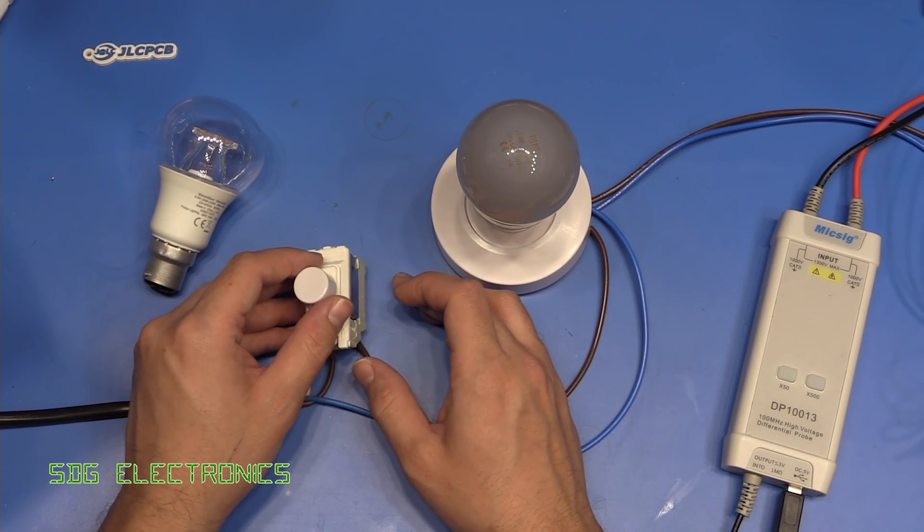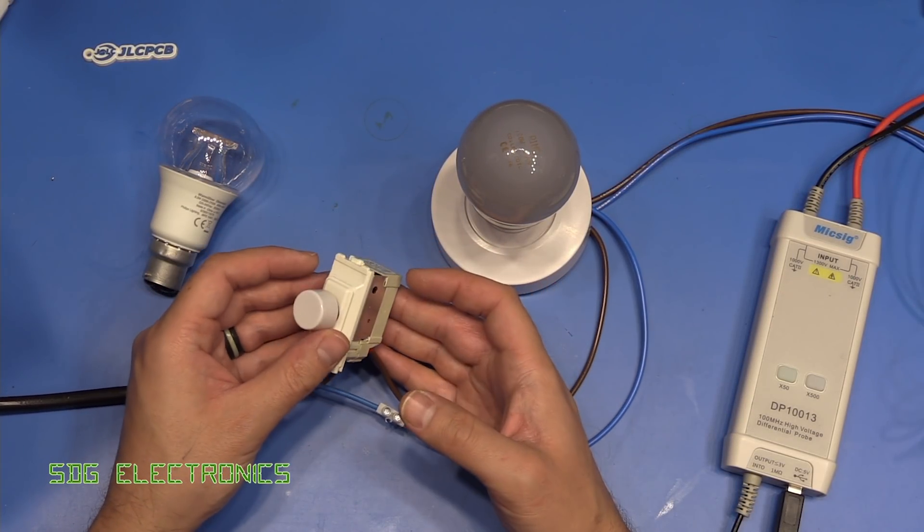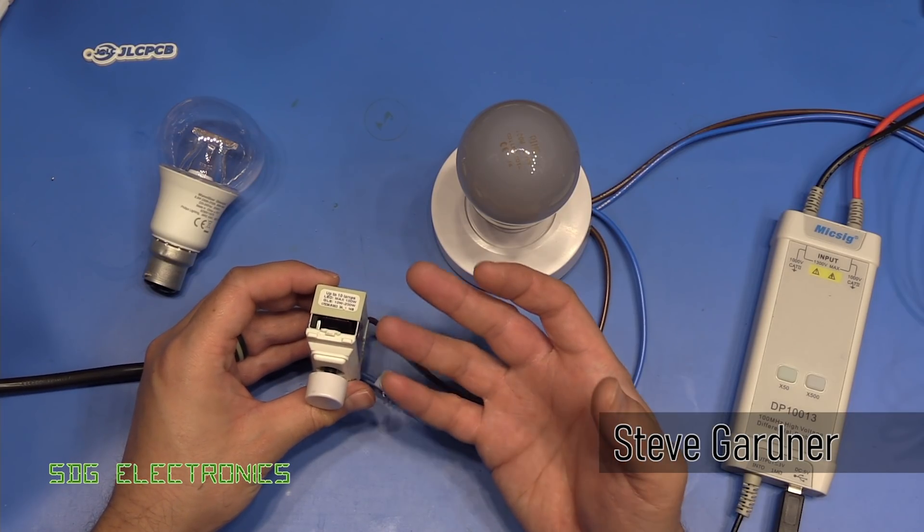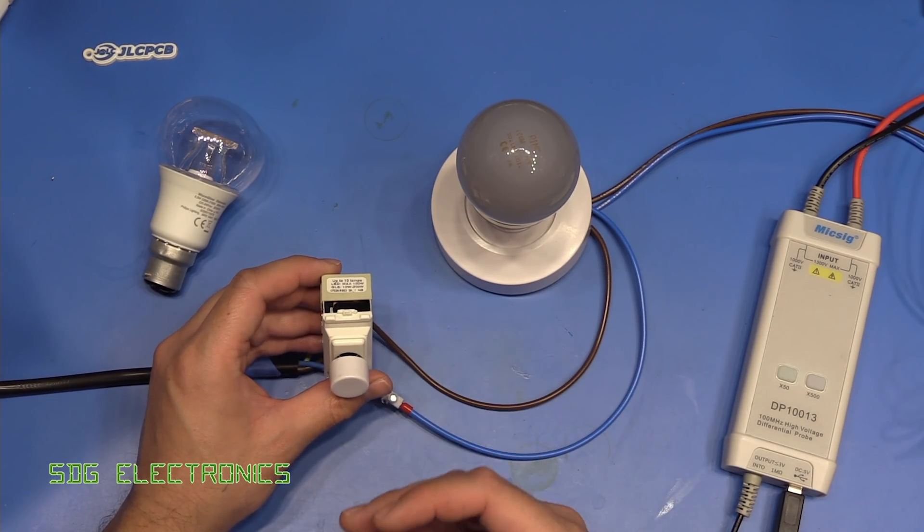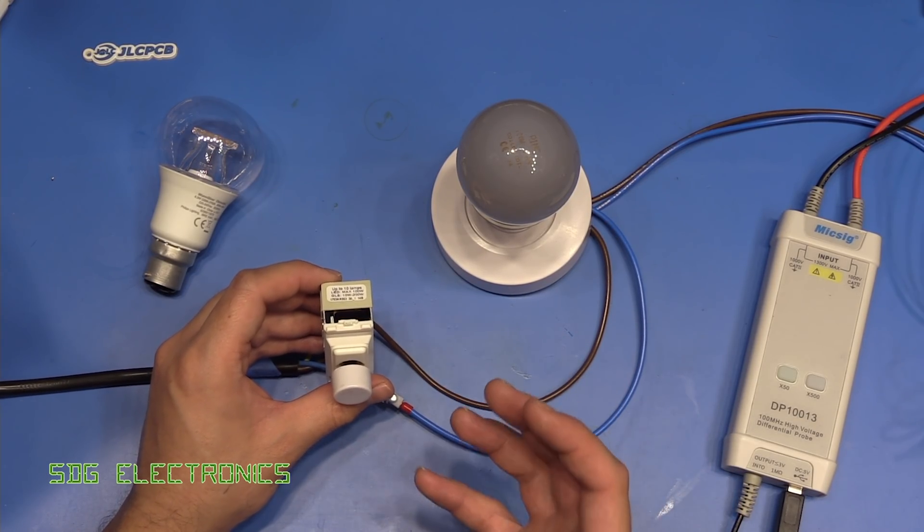Hi. Today we're going to have a look at this dimmer switch, which appears to have failed. It was installed at my parents' house, and it was controlling about five LED downlights, and then it appeared to lose all ability to do any dimming.